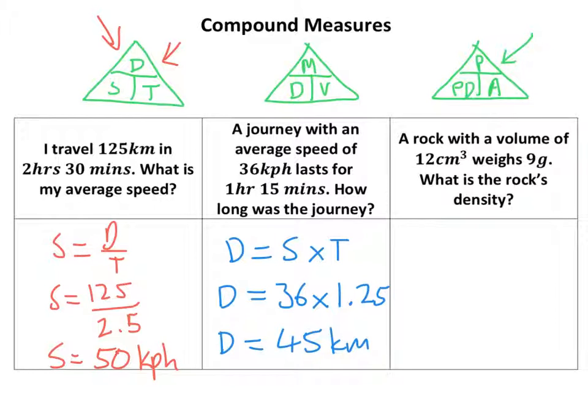Finally, we've got a density question. It says a rock with a volume of 12 centimeters cubed weighs 9 grams. So we are working out density and we're using this one here.